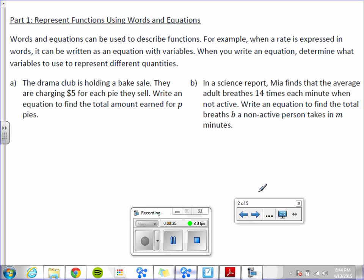Letter A. The drama club is holding a bake sale. They are charging $5 for each pie they sell. Write an equation to find the total amount earned, T, for P pies.